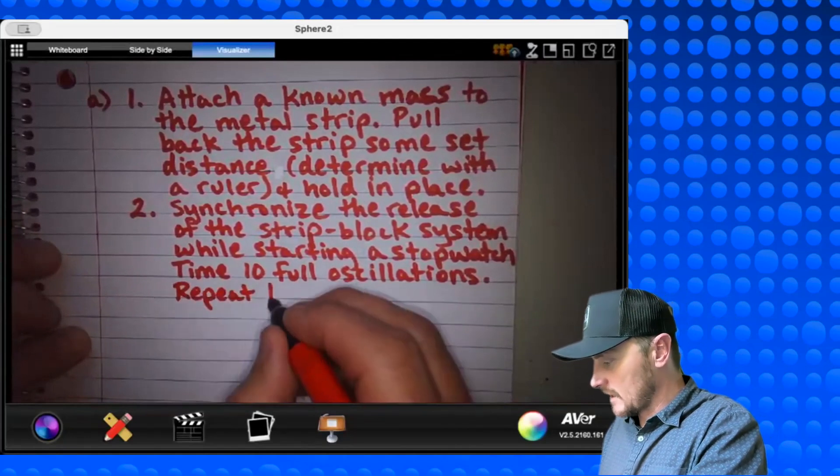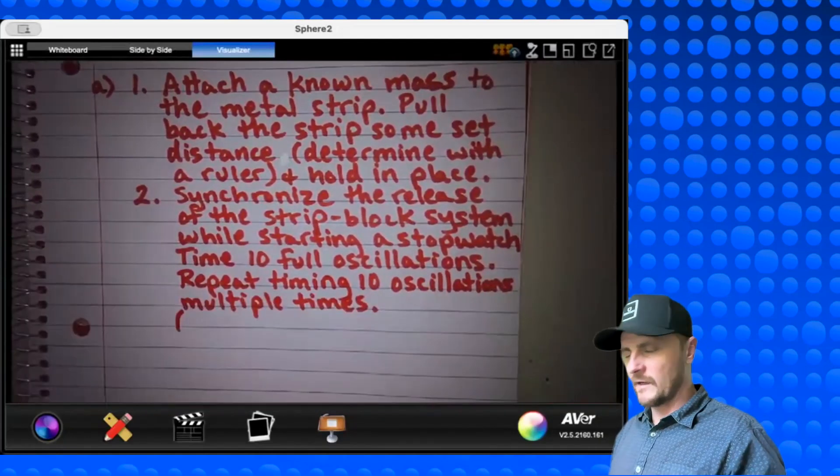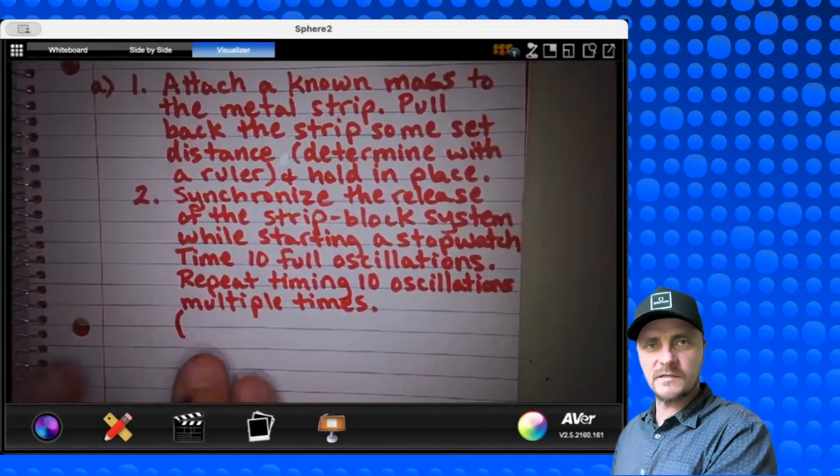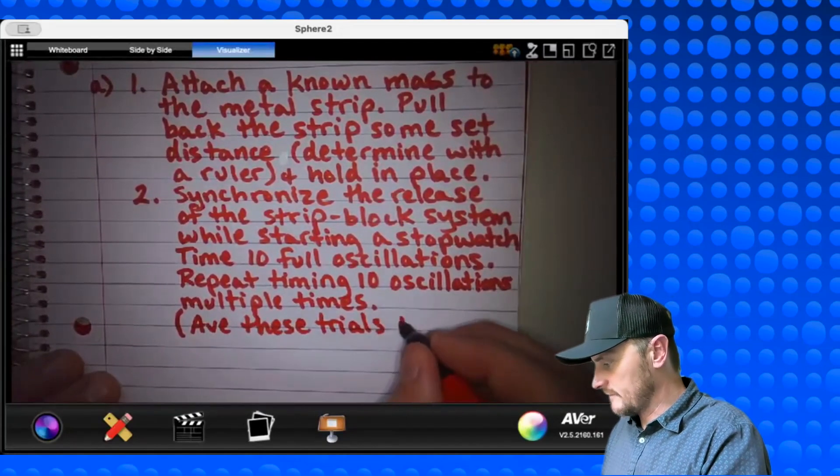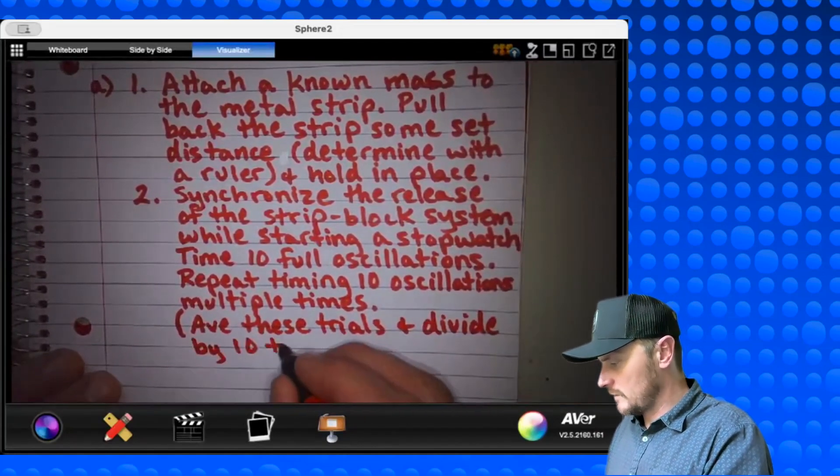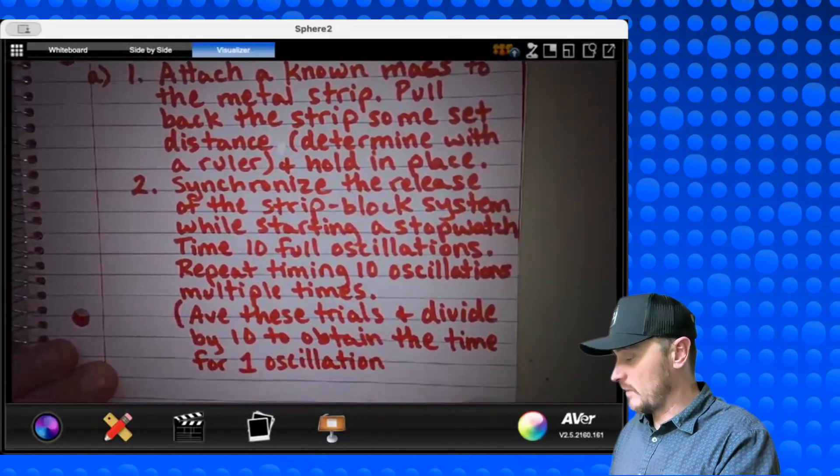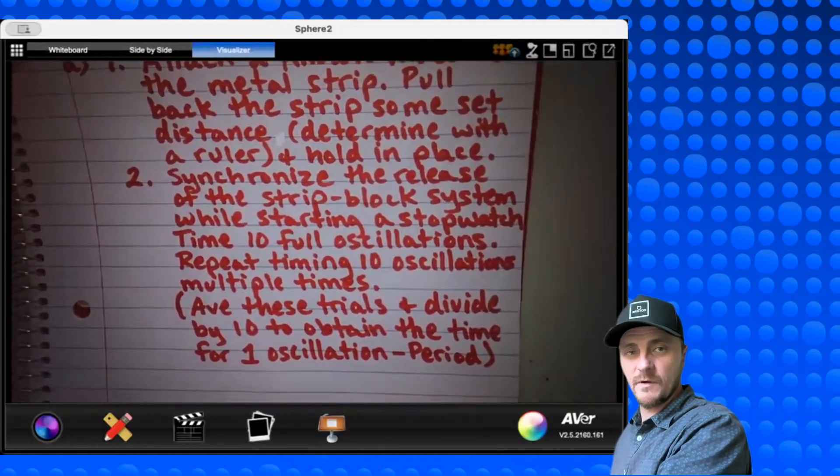And a quick side note here, you don't want to just time one oscillation because there's a lot of error in trying to get a stopwatch to start and stop in such a short period of time. So if we're going to reduce experimental uncertainty, we need to time a lot more oscillations than just one. And I'll say here, repeat timing 10 oscillations multiple times. Again, I don't like getting into mathematics within the procedure, but I think this is something we should say. Average these trials and divide by 10 to obtain the time for one oscillation. By the way, that is the period.